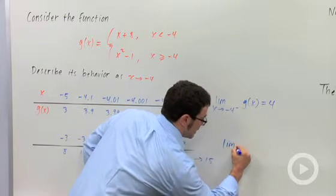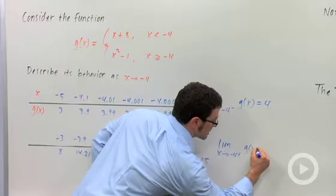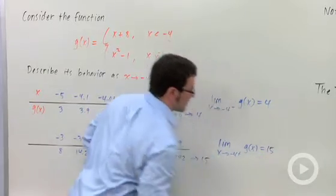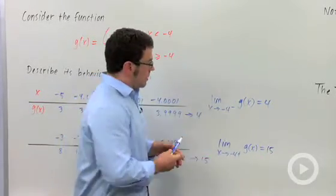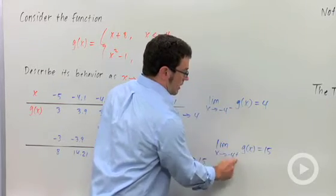And then we say limit as x approaches negative 4 from the right of g of x is 15. This is the right-hand limit. This little superscript tells you which it is, whether it's the left-hand or the right-hand limit.